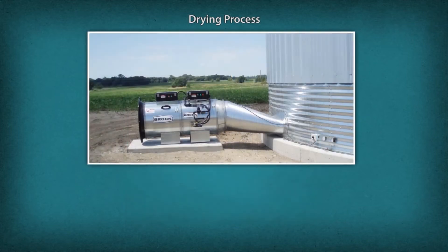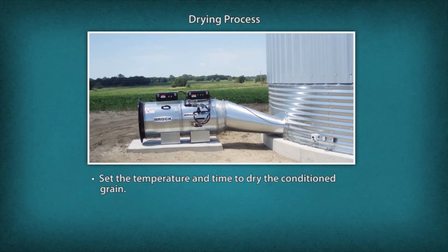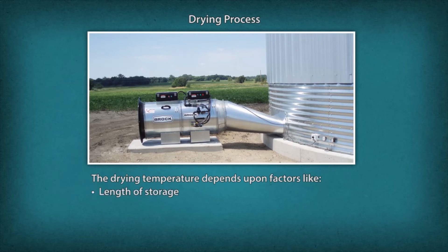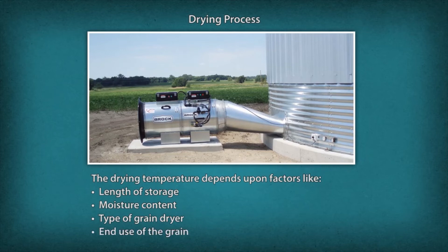A grain mill operator adjusts controls of the dryer to set the temperature and time to dry the conditioned grain. The drying temperature depends upon factors like length of storage, moisture content, type of grain dryer, and end use of the grain.